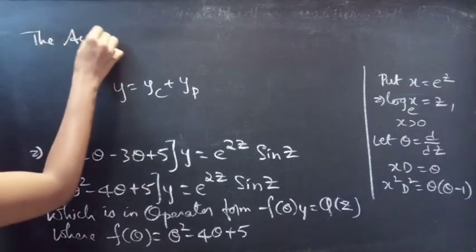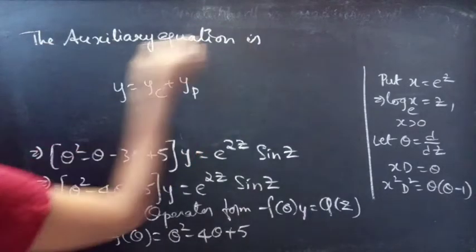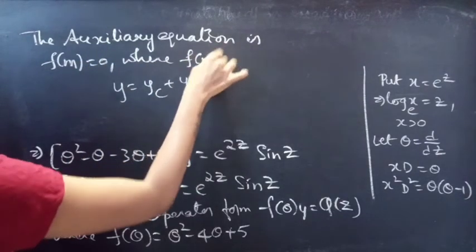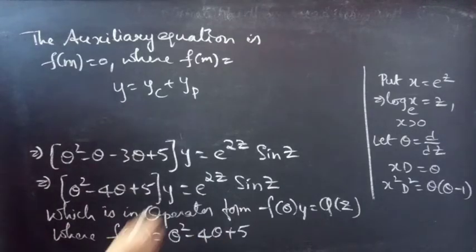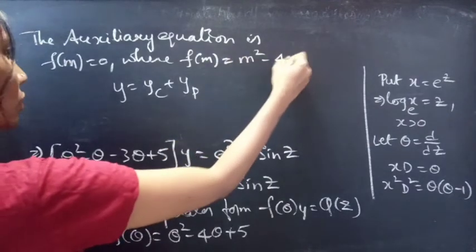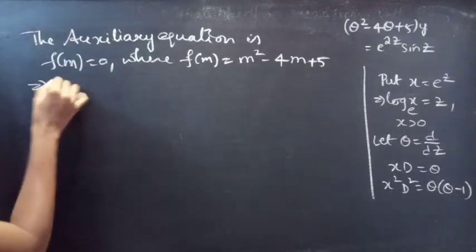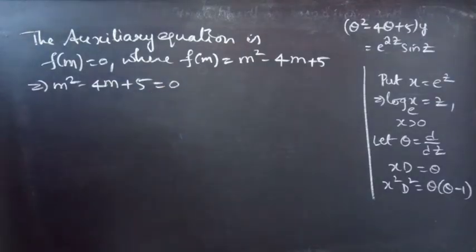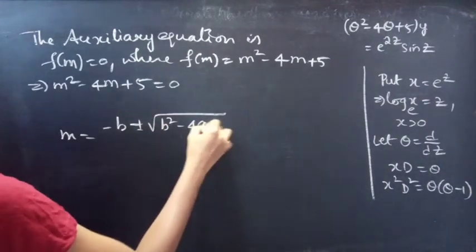The auxiliary equation is f(m) equals 0, where f(m) — replacing θ by m in f(θ) equals θ² minus 4θ plus 5 — gives f(m) equals m² minus 4m plus 5. So the auxiliary equation becomes m² minus 4m plus 5 equals 0.